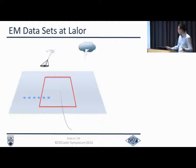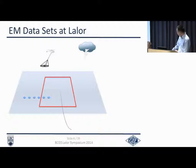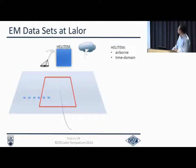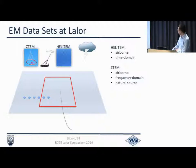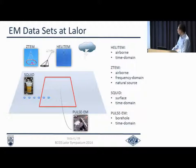This cartoon shows the typical surveys you can do at a mine — a source from lightning as natural source, a source carried by helicopter, or one on the ground. The first data set is a heli-time survey — time domain airborne. There is also Z-TEM from Geotech, which is airborne frequency domain using natural source. For the underground survey, we use a SQUID survey collected by Discovery, which features a powerful SQUID sensor. We also do downhole EM inversion using the POS-EM data set.